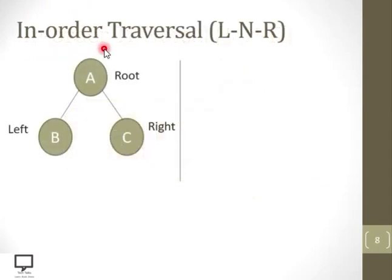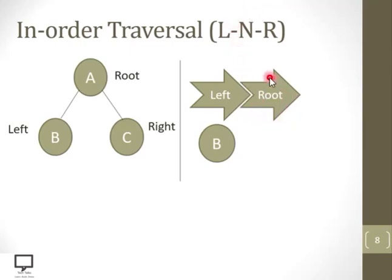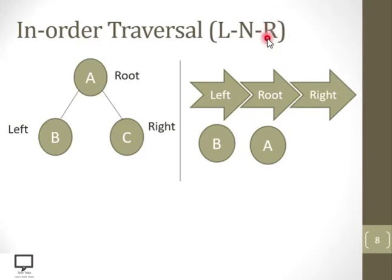Here is a simple example where A is the root node, B is its left child, and C is its right child. Following the sequence left, root, right: first we traverse B (left), then A (root), and at the end C (right child of A). So the in-order output for this tree is B, A, C.